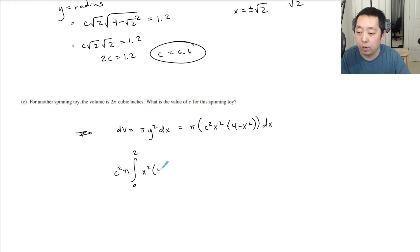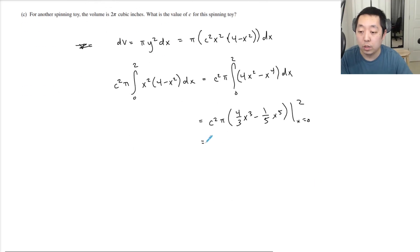I pull out π and c². This becomes the integral from 0 to 2 of x²(4-x²)dx. That's c²π times the integral from 0 to 2 of (4x² - x⁴)dx. This equals c²π times [4x³/3 - x⁵/5] from x=0 to 2.